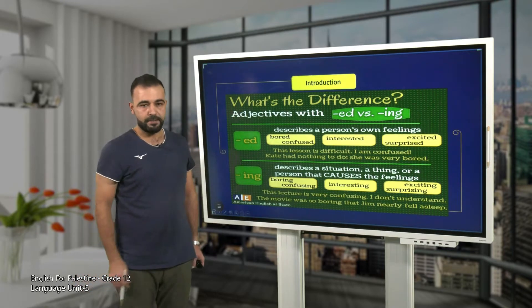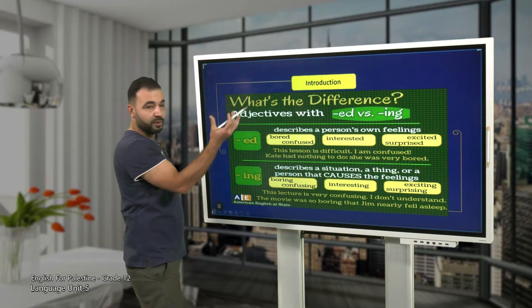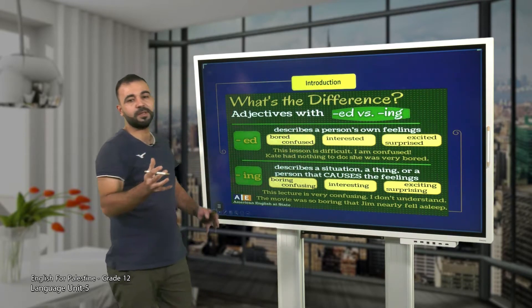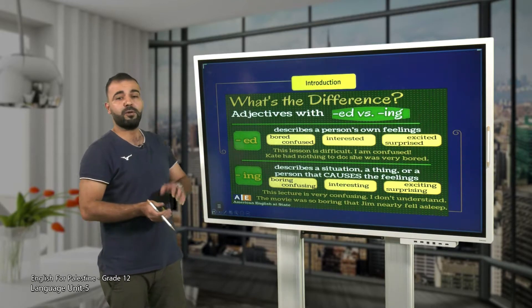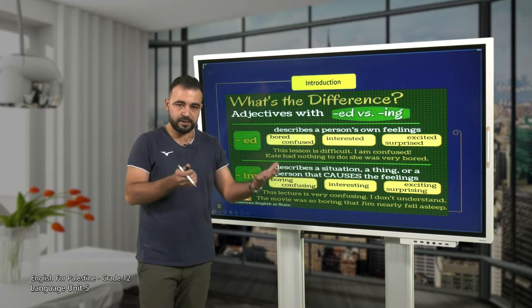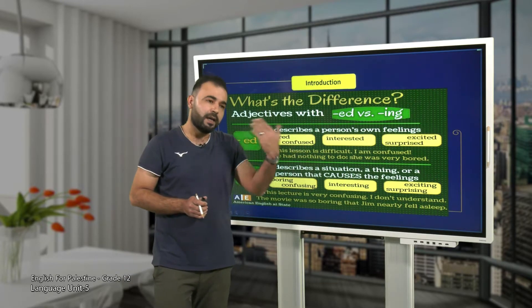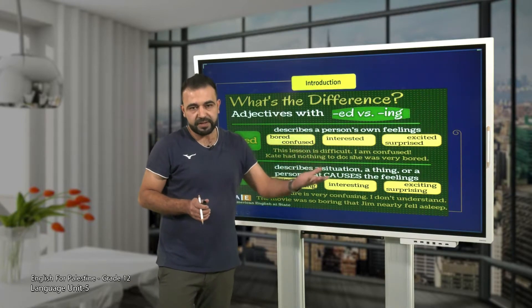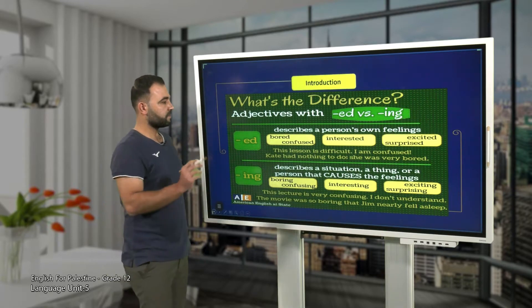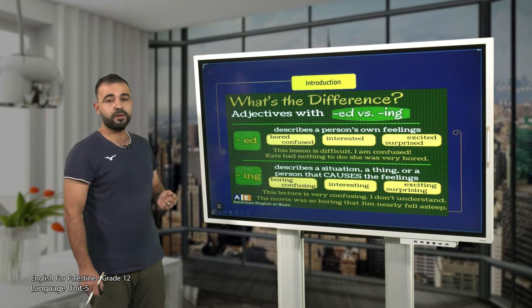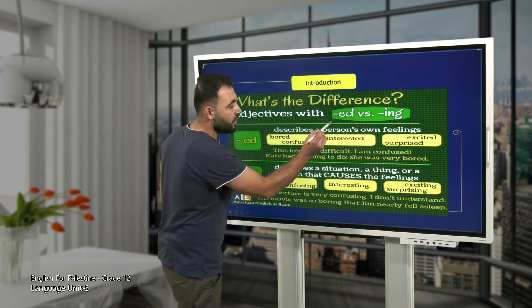Let's move to this summary. What's the difference between adjectives made by the past participle form? When talking about past participle forms, we have regular and irregular past participles. Here, -ed symbolizes the regular past participle forms, and the irregulars have many endings. Now, what's the difference between adjectives formed by -ing and those using the past participle form?